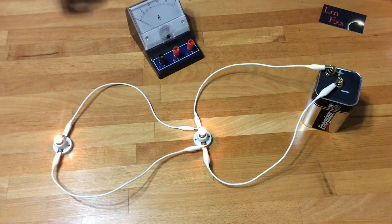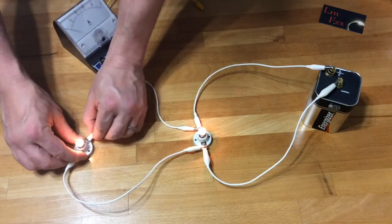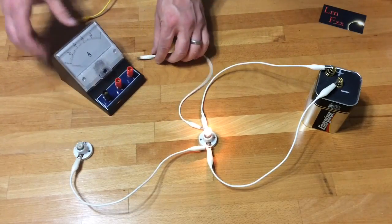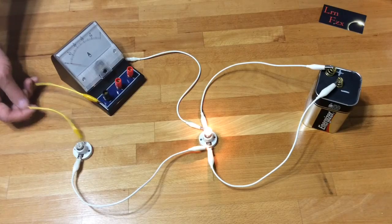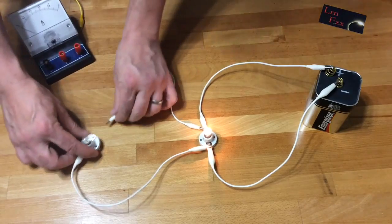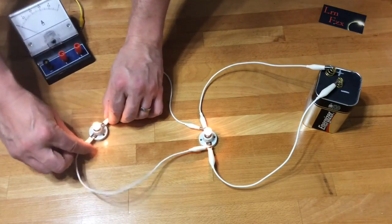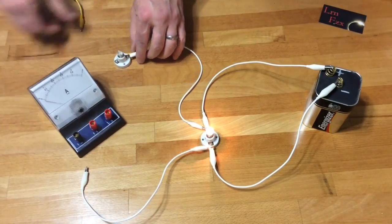And then find the next current on the positive side of that far bulb. Put the ammeter in there after you've disconnected. And then the negative side of the far bulb, reconnect the original circuit, disconnect, measure that current.